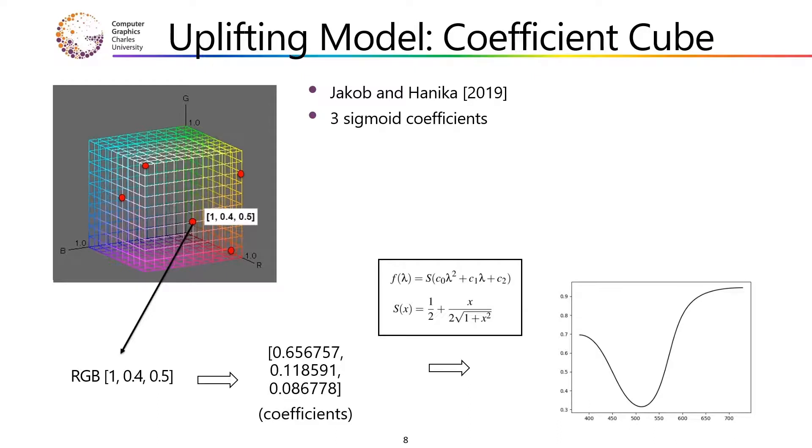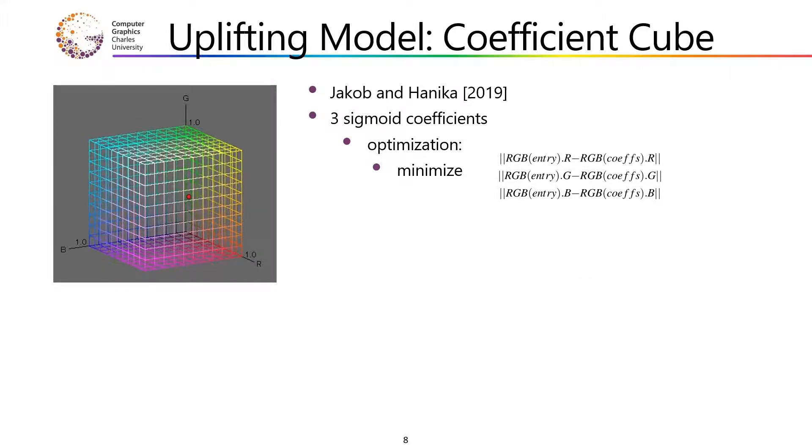The sigmoid coefficients are obtained by an optimization tool by minimizing the absolute difference between the RGB of the lattice point and the RGB that the coefficients currently reconstruct for each of the axes. In order to uplift an arbitrary RGB, the original paper proposes finding the voxel that the RGB value falls into and then interpolating spectra at the corners of this voxel in order to obtain the uplifted spectrum.